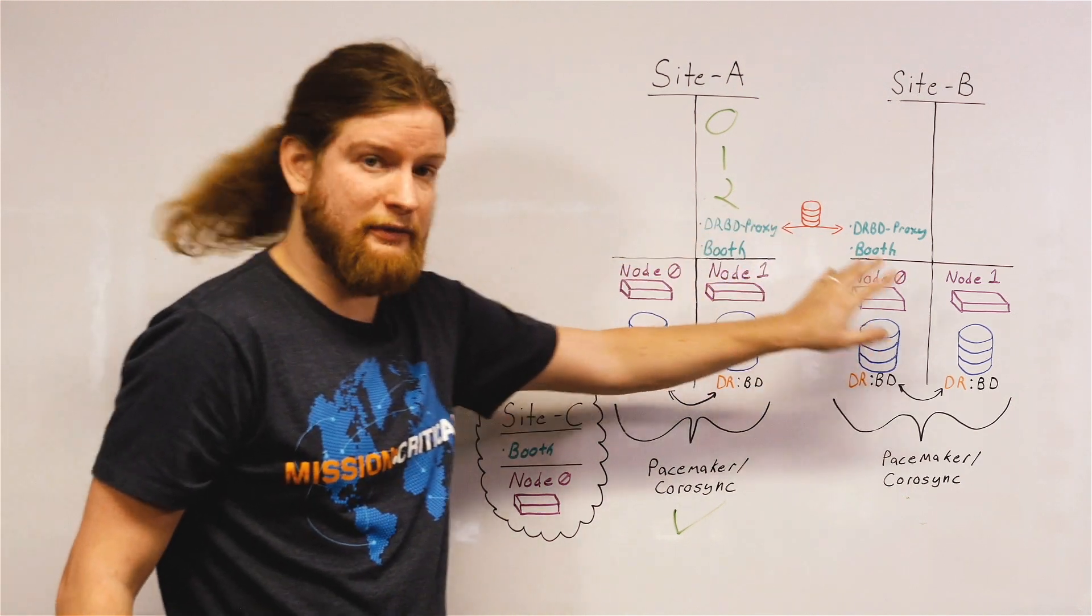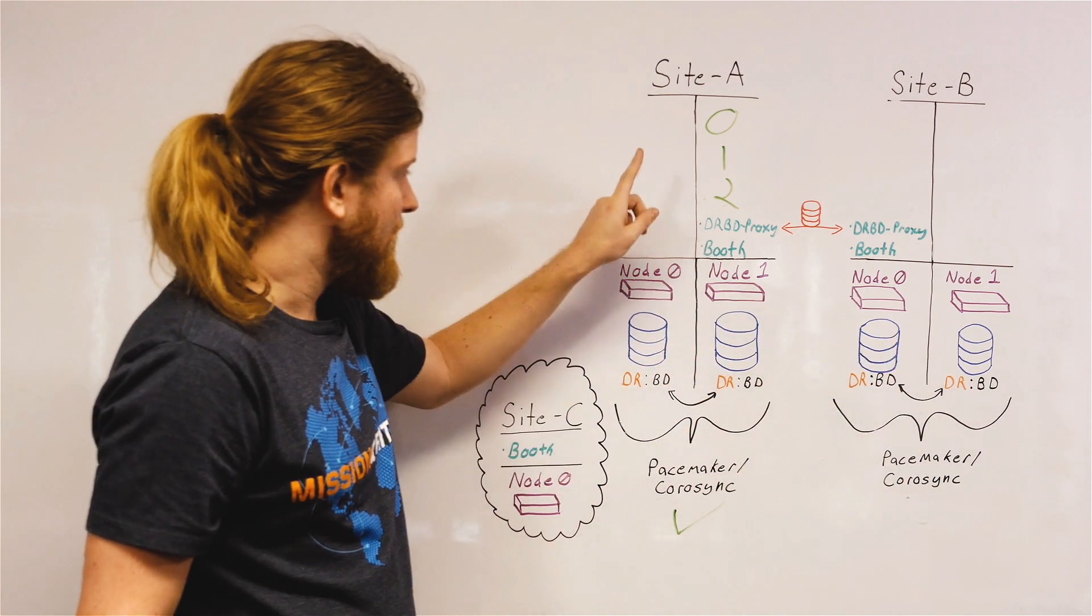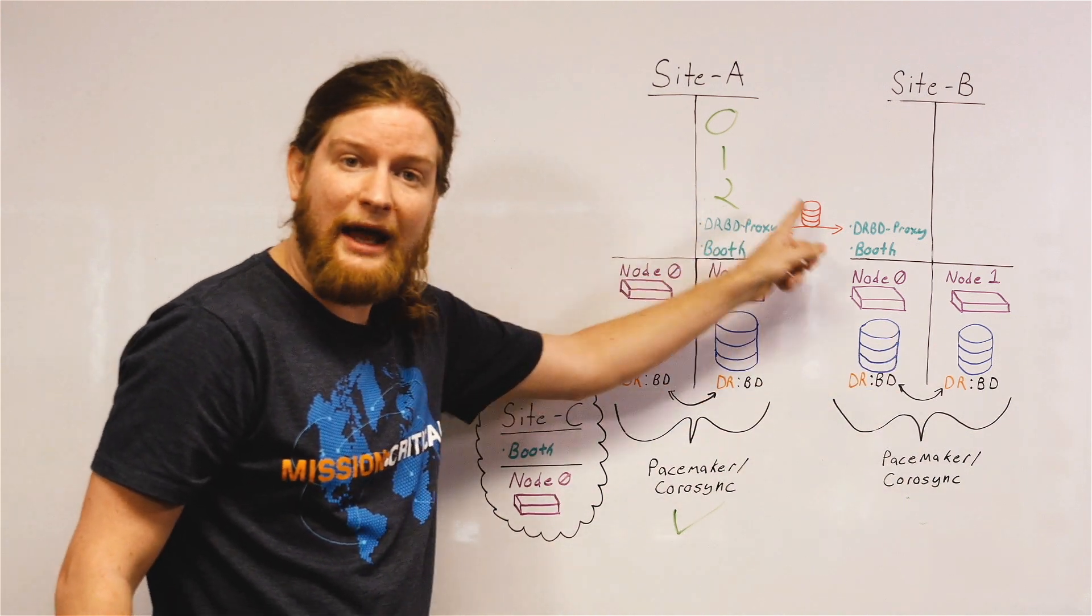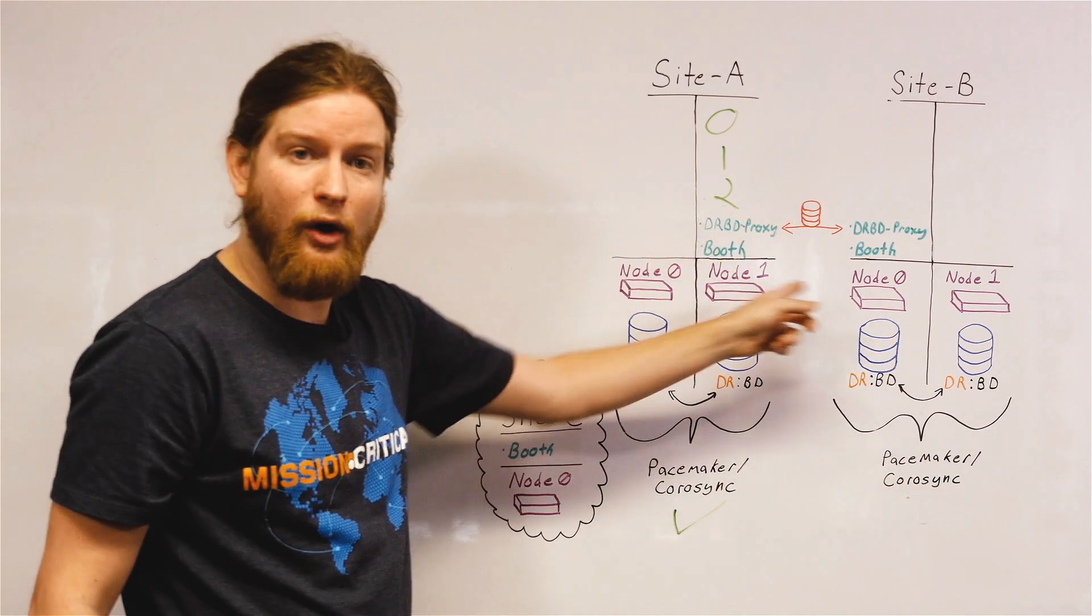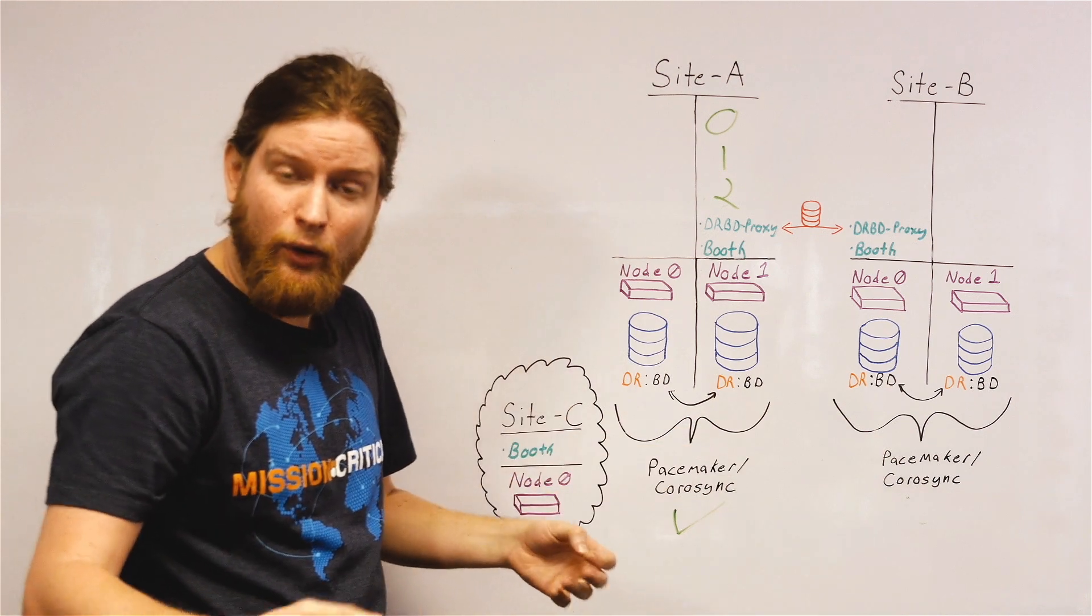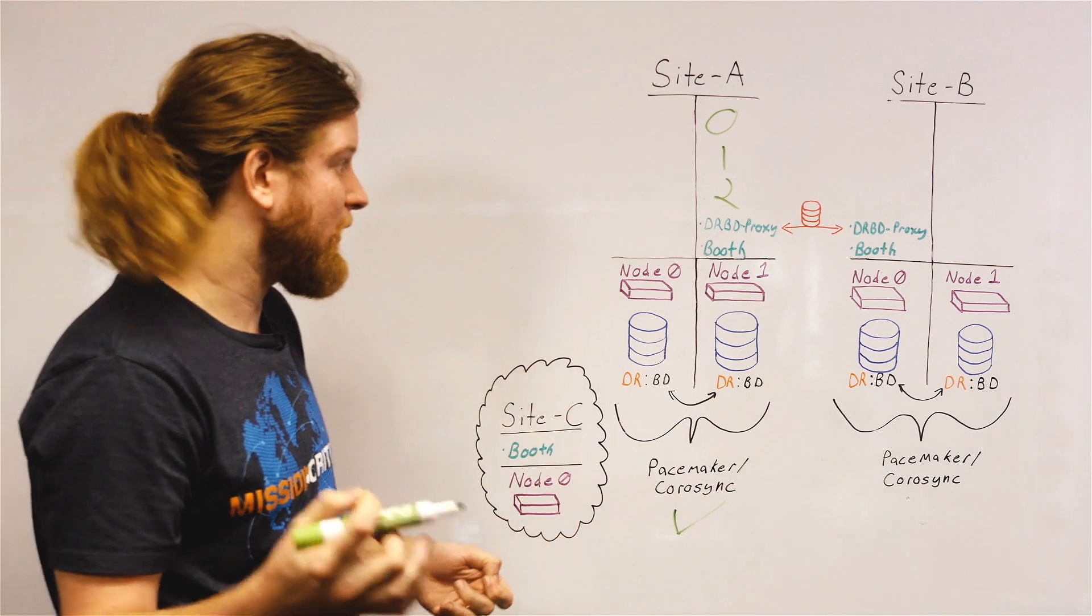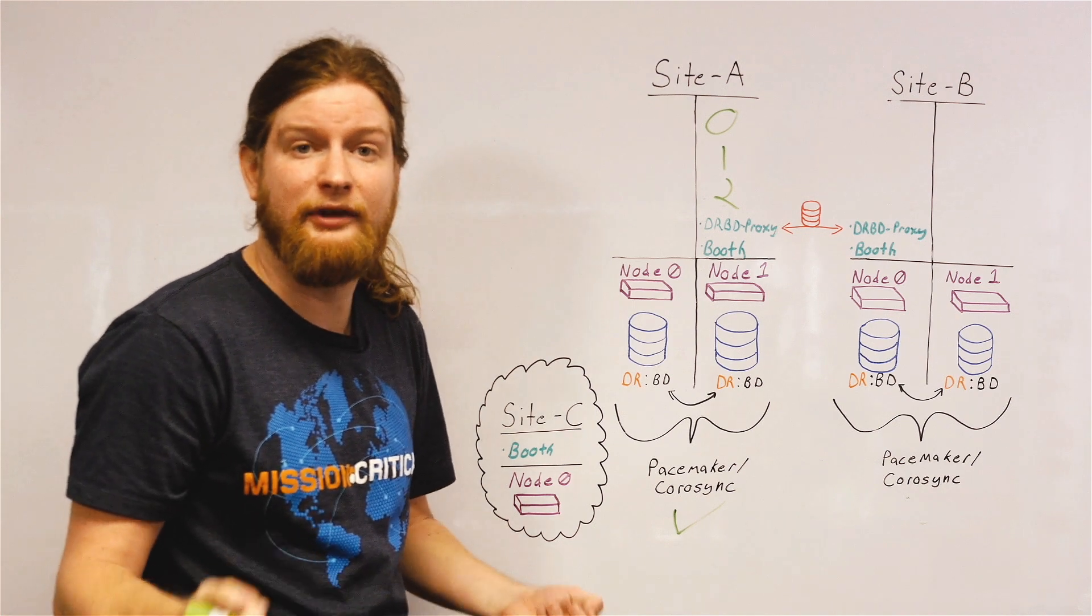So you have four replicas of your data. And one of them can be active at a time out of all four of those replicas. So only one node out of one site can run services, which is safe and stable.